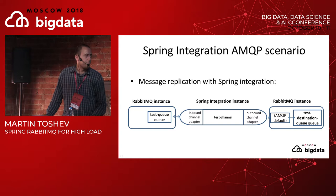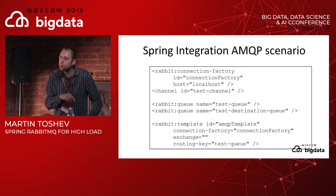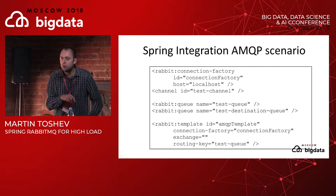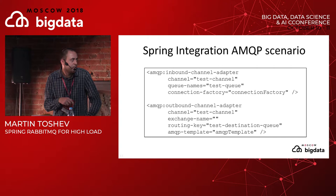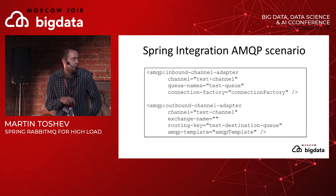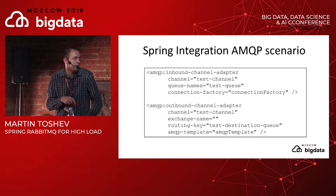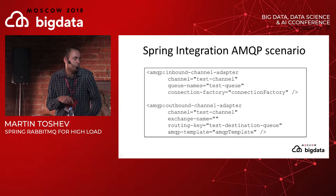To create this replication scenario using Spring XML configuration, you define the two queues, create a RabbitTemplate used by the Spring Integration utilities, then define the inbound channel adapter specifying the Spring Integration channel to deliver messages to, the RabbitMQ queue names to consume from, and the connection factory. For the outbound channel adapter you specify the Spring Integration channel to read from, the routing key, the exchange, and the RabbitTemplate instance to use for publishing.